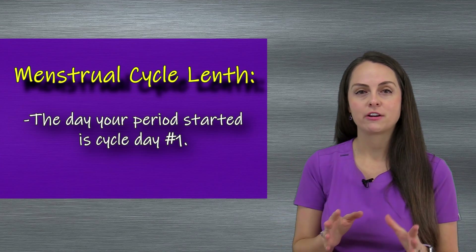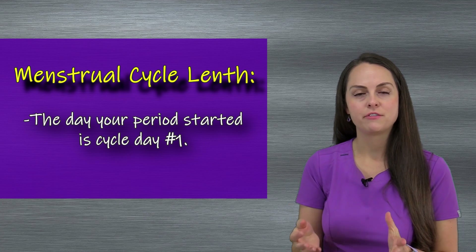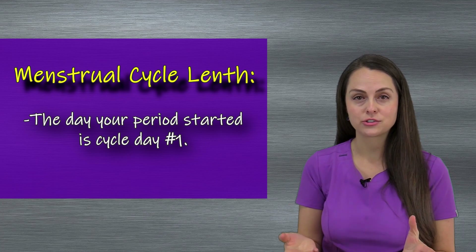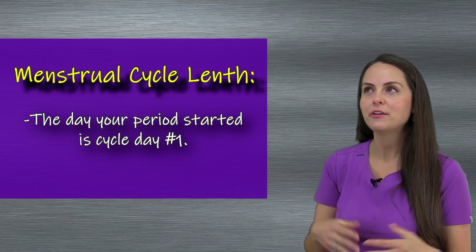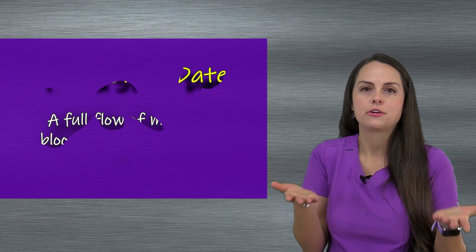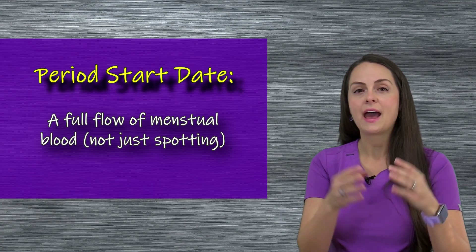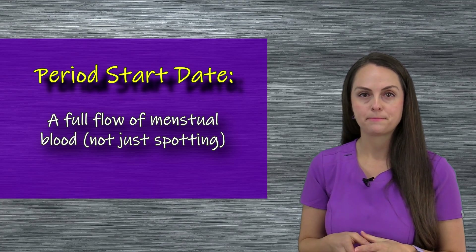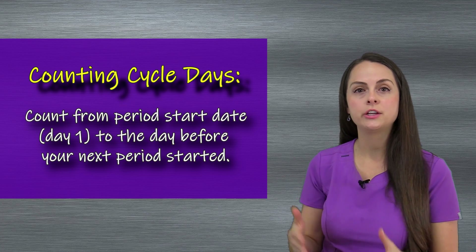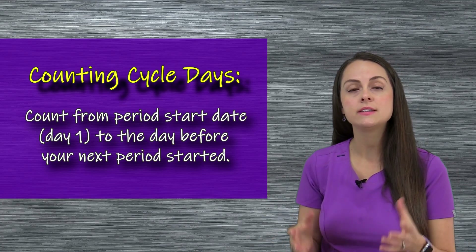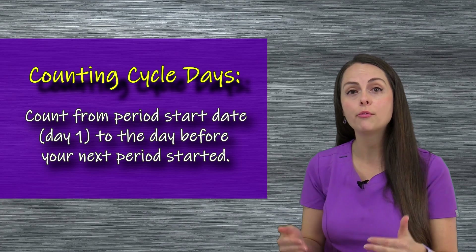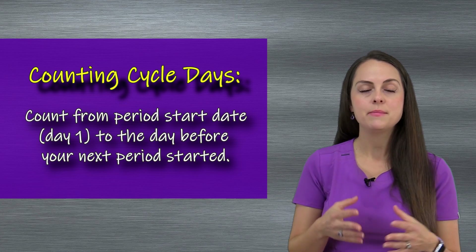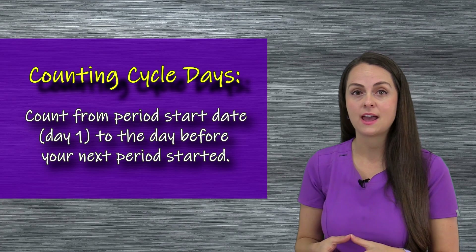Once you've figured out your start dates, you're ready to calculate your menstrual cycle length. You want to pay attention to that very first month and look at day one of your period — when your period actually started — because this is known as cycle day one. You want to make sure that day is when you had an actual flow of menstrual blood; we don't count spotting. Then you're going to keep counting your cycle days until you get to the day before the day your next period started, because this represents the last day of that cycle.